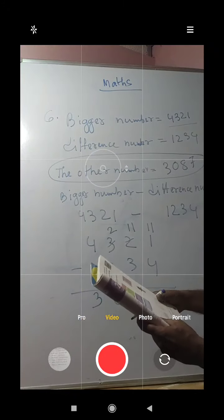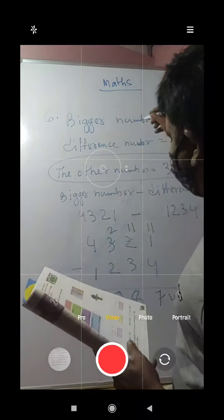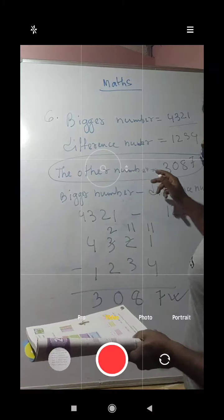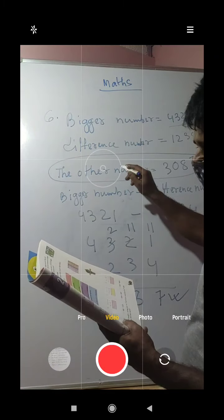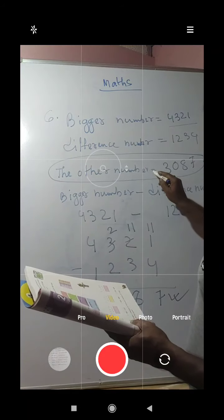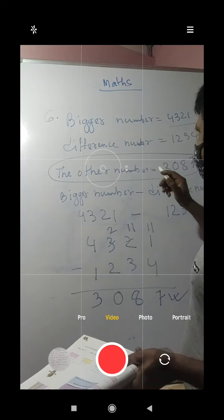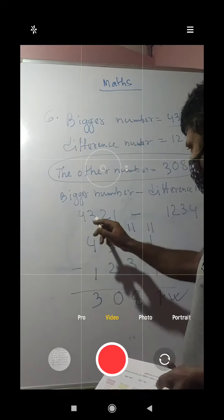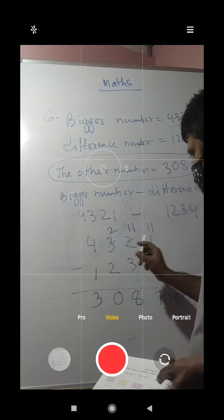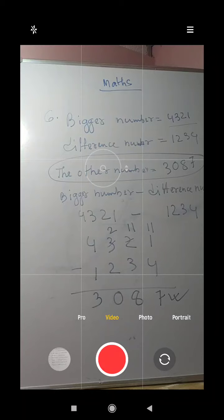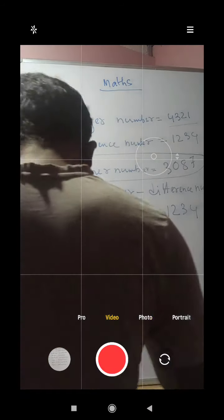So the other number is 3087. Always write the equation like this: bigger number is 4321, difference number is 1234, so the other number equals bigger number minus difference number — 4321 minus 1234 equals 3087. This is the answer to question number 6. I hope you have understood.